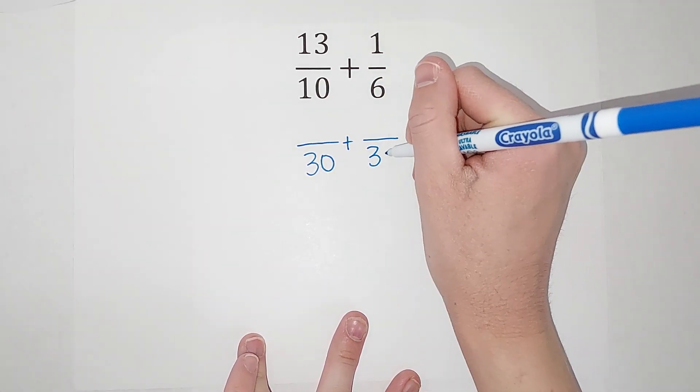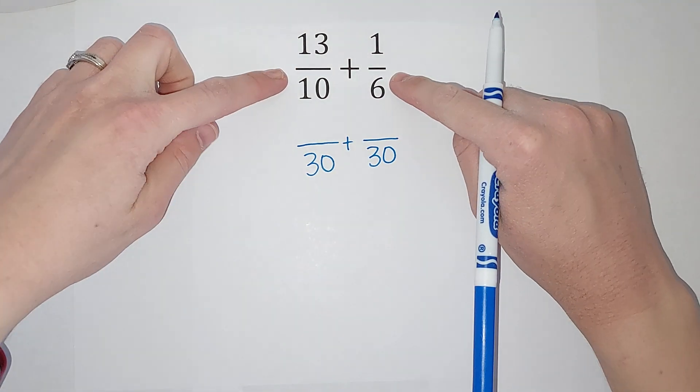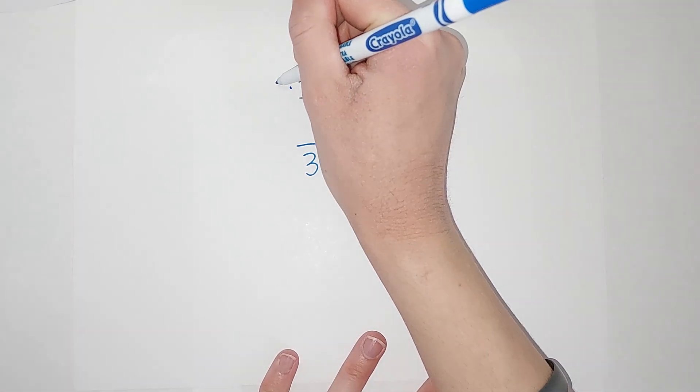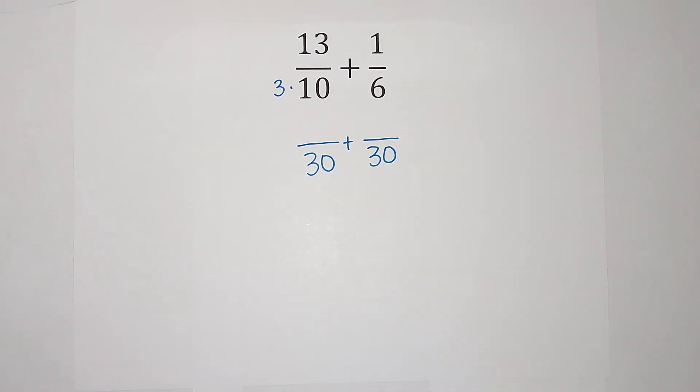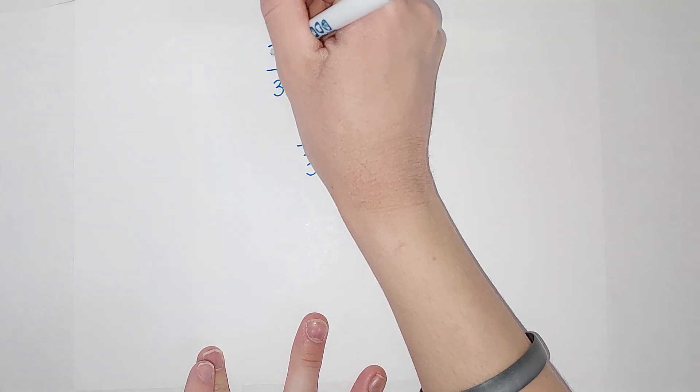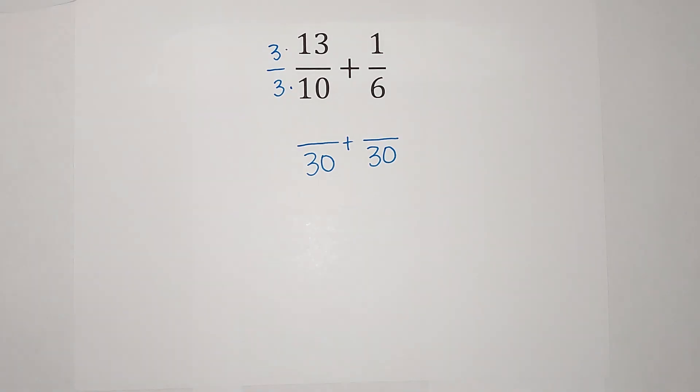So what did I do to 10 to get it to be 30? Well, I multiplied it by 3. But I can't just go multiplying by 3 wherever I want; that would change my fraction. But what I can do is multiply by 3 over 3, and the reason I can do that is because 3 over 3 simplifies down to 1.